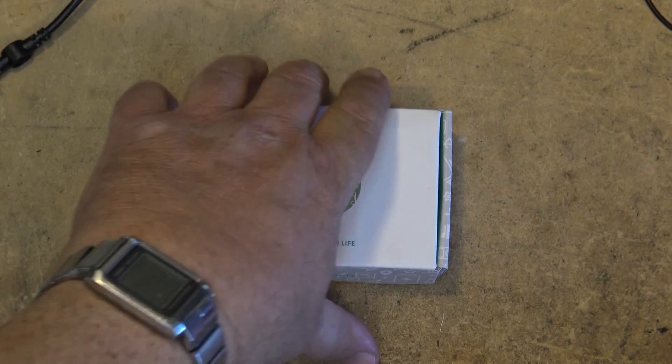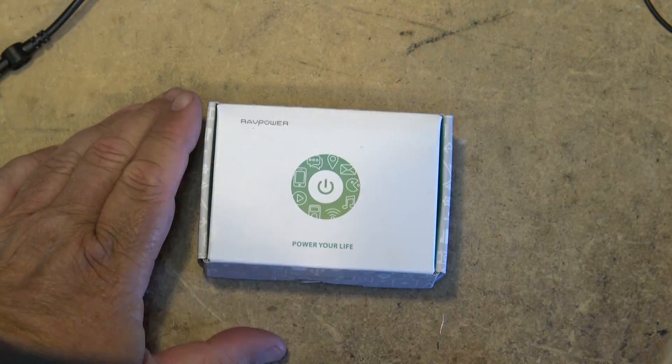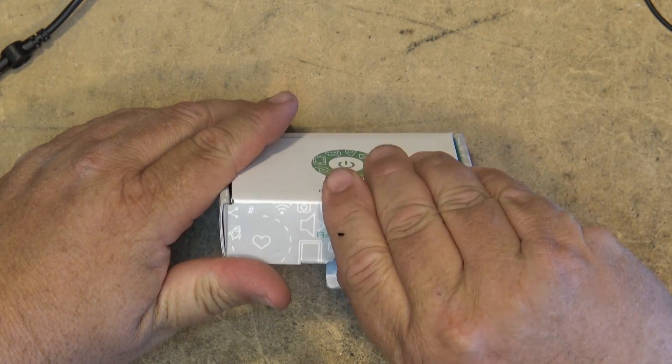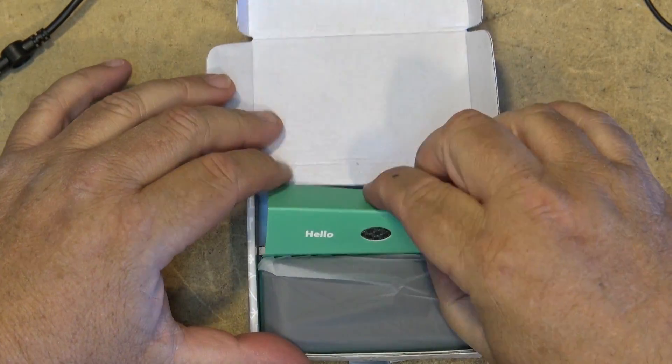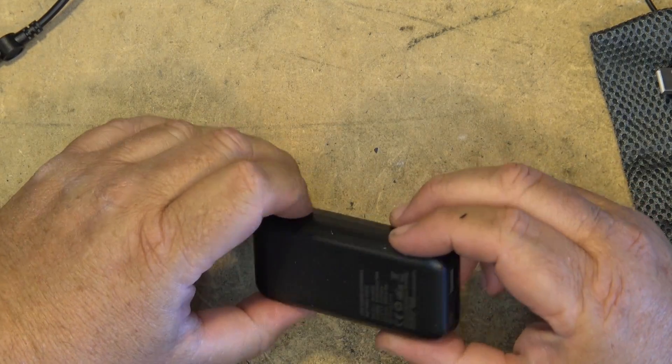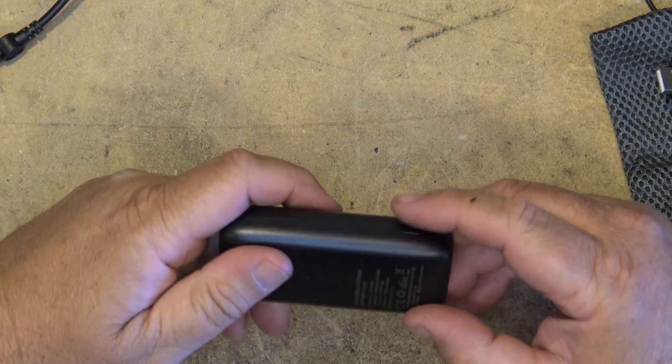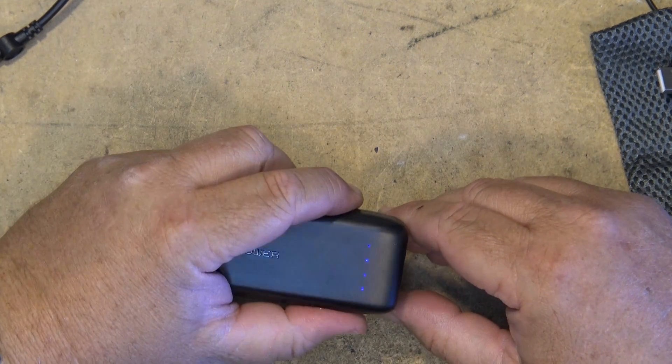What we have here is a RAVPOWER ACE series external battery pack. We're going to tear this one down and put it through its paces and take a look at the build quality of this little unit. Here's the power button on the side which also checks your battery level.